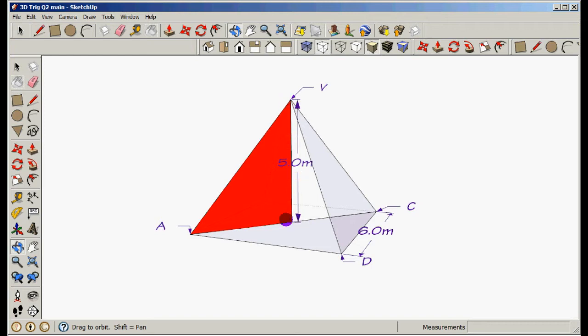And then if we drop that vertical down here, because it's a vertical and this is horizontal, we create a right angle triangle here. So that is how we find the angle between a line and a plane. Just always remember that.